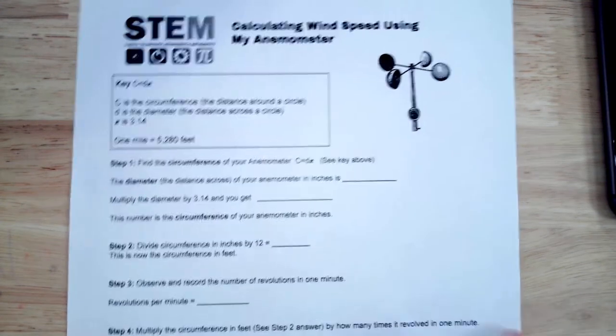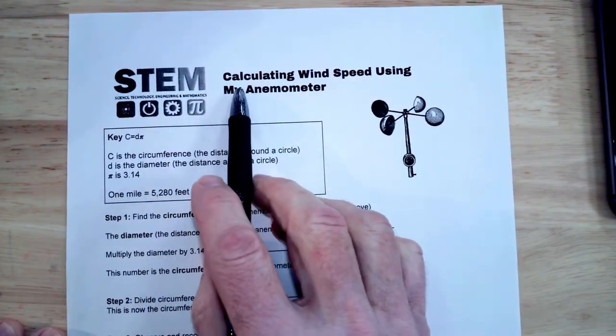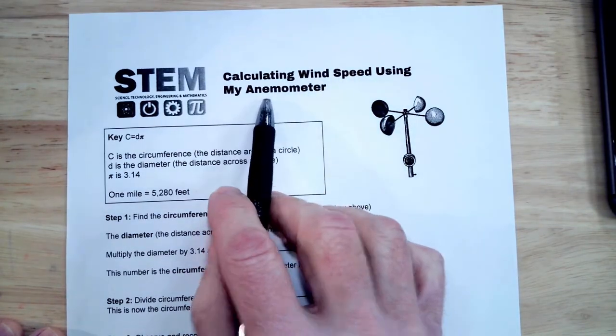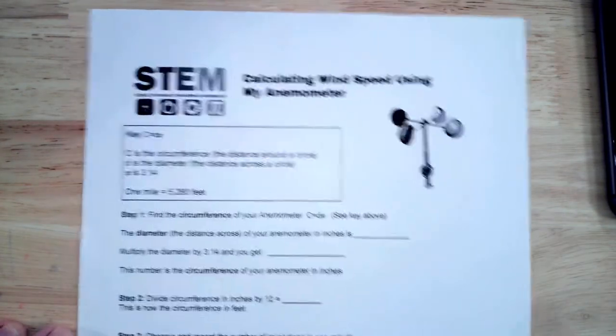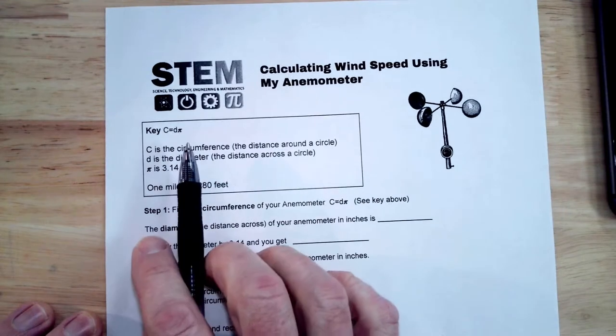All right students, this is a quick rundown of how to figure out wind speed using the anemometer you made in class. First, you're going to notice there's a key here.